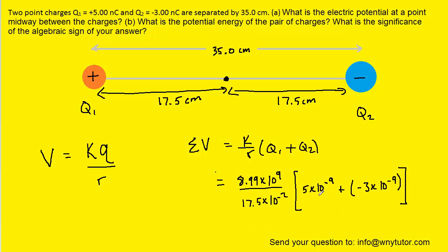So here we've plugged in the two charges. Again, we converted to coulombs by multiplying by 10 to the minus 9. Notice we also changed the centimeters into meters by multiplying it by 10 to the minus 2.